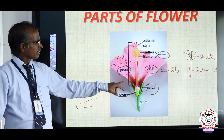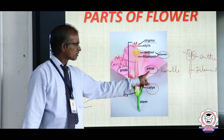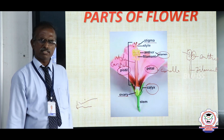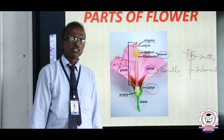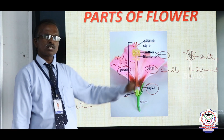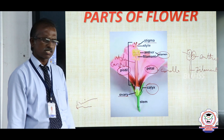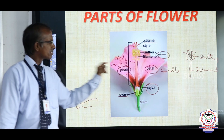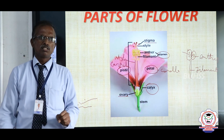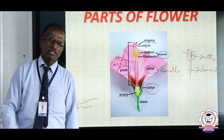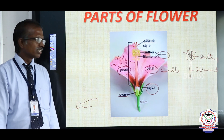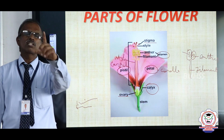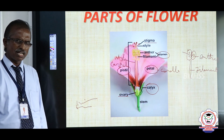The first two whorls — calyx and corolla — do not help in reproductive function. They are known as non-essential whorls. The remaining stamen and pistil, which are involved in reproductive function, are called the essential whorls of the flower.